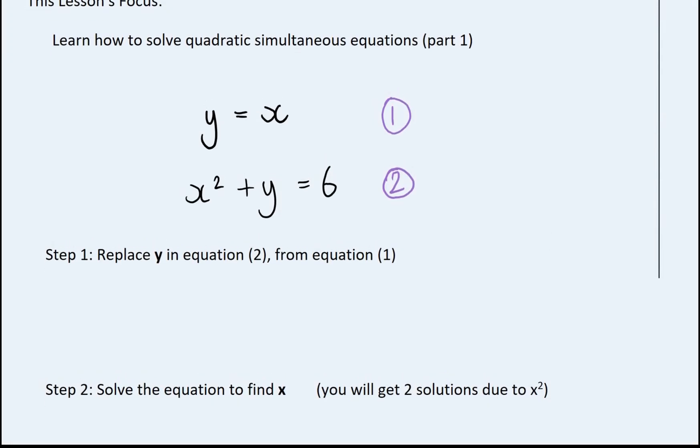So this method is used for solving this type of problem. So you've got a simultaneous equation, you've got two equations, however one of them will contain an x squared or a y squared or both of those terms. So let's get started. This follows pretty much the same steps that we looked at for solving simultaneous equations by substitution.